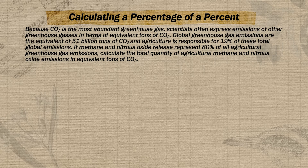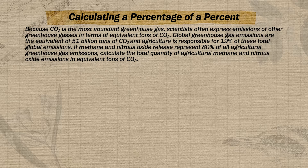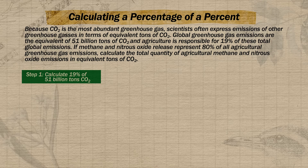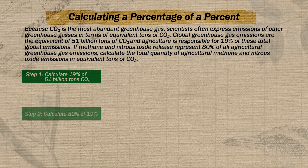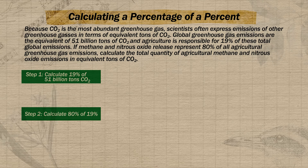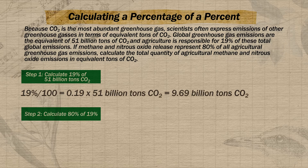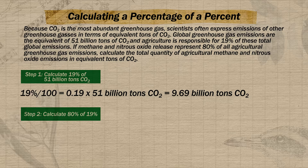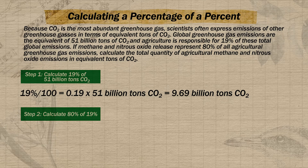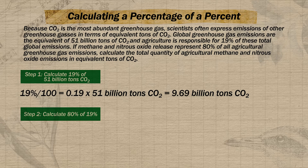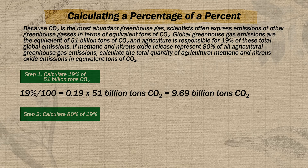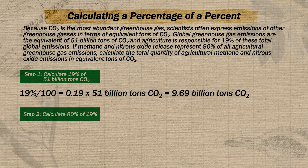There are two basic steps. First, we need to find the tons of greenhouse gases from agriculture by taking 19% of 51 billion. We convert 19% into a decimal by dividing by 100, giving us 0.19, then multiply by 51 billion, which gives us 9.69 billion tons — the total greenhouse gas emissions from agriculture.